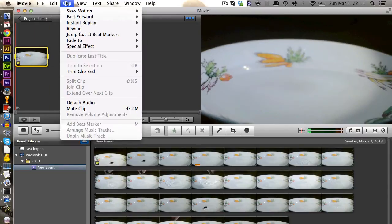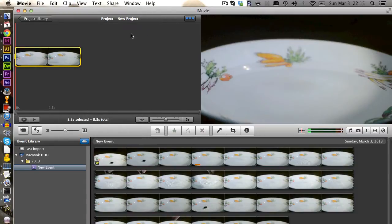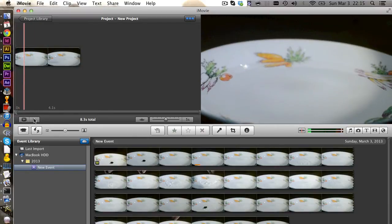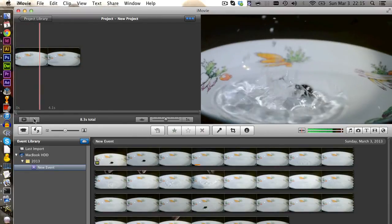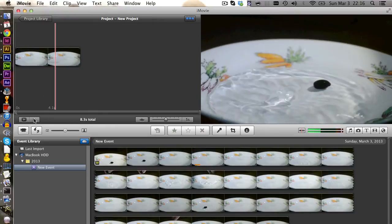And now we can go on clip, slow motion and set this for example to 10%. And if we play it back now, you get a slow motion clip.